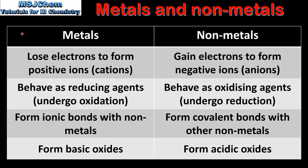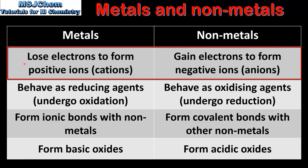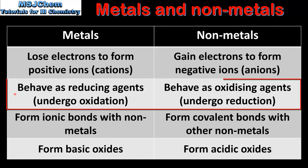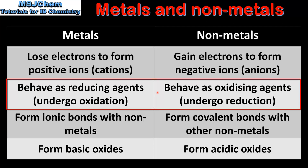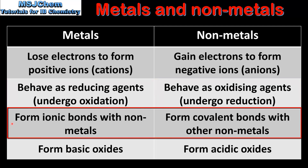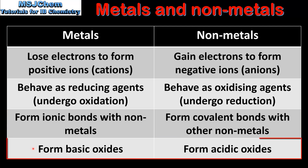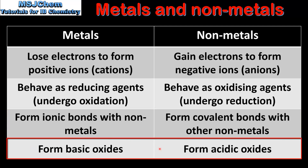Next we look at chemical properties. Metals tend to lose electrons to form positive ions, whereas non-metals tend to gain electrons to form negative ions. Metals behave as reducing agents, and non-metals behave as oxidizing agents. In terms of their bonding, metals form ionic bonds with non-metals, and non-metals also form covalent bonds with other non-metals. Finally, metals form basic oxides and non-metals form acidic oxides.